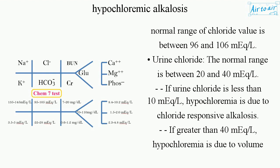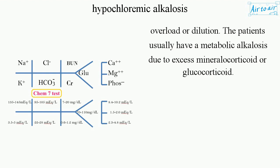Urine chloride is also assessed; the normal range is between 20 and 40 mEq/L. If urine chloride is less than 10 mEq/L, hypochloremia is due to chloride-responsive alkalosis. If urine chloride is greater than 40 mEq/L, hypochloremia is due to volume overload or dilution, and patients usually have metabolic alkalosis due to excess mineralocorticoid or glucocorticoid.